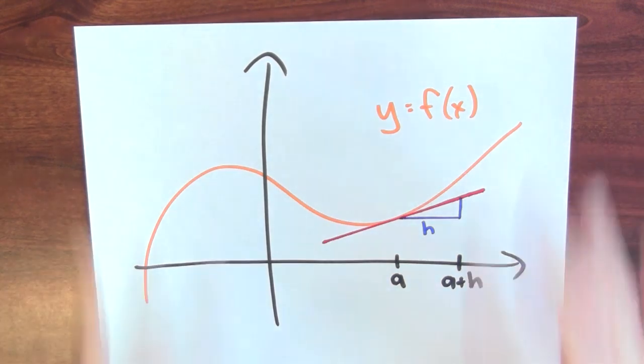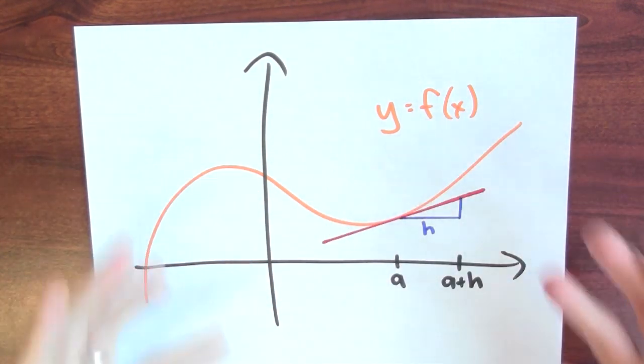Remember, f prime of x is encoding how wiggling x affects f of x. We can see this by thinking about slopes of tangent lines as well.